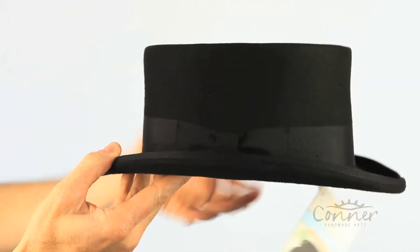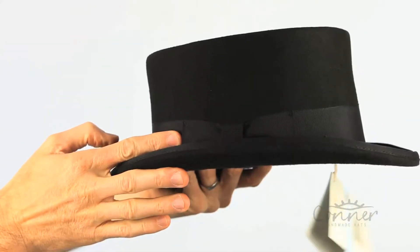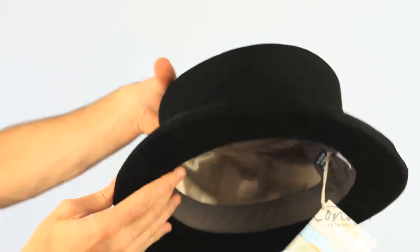It's made from Australian wool, a nice grosgrain band in a little bow shape here and trim on the outside.